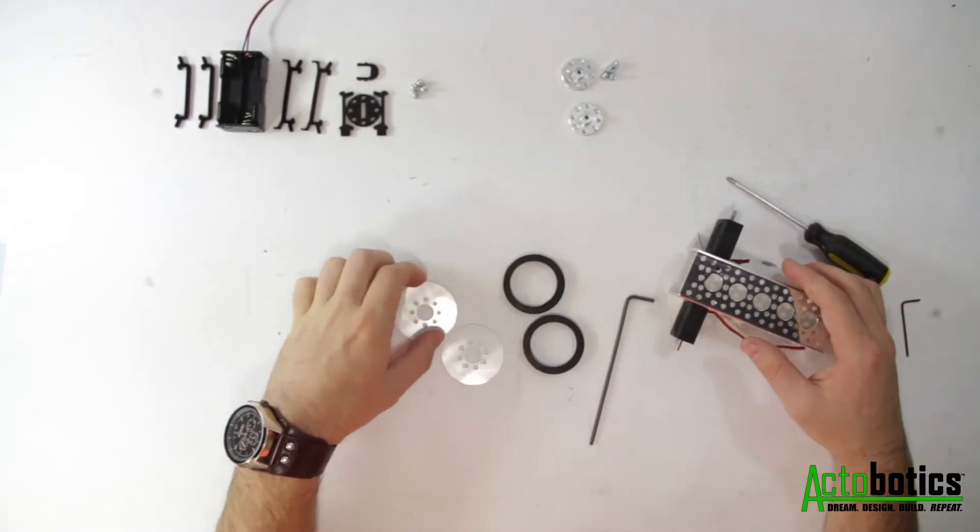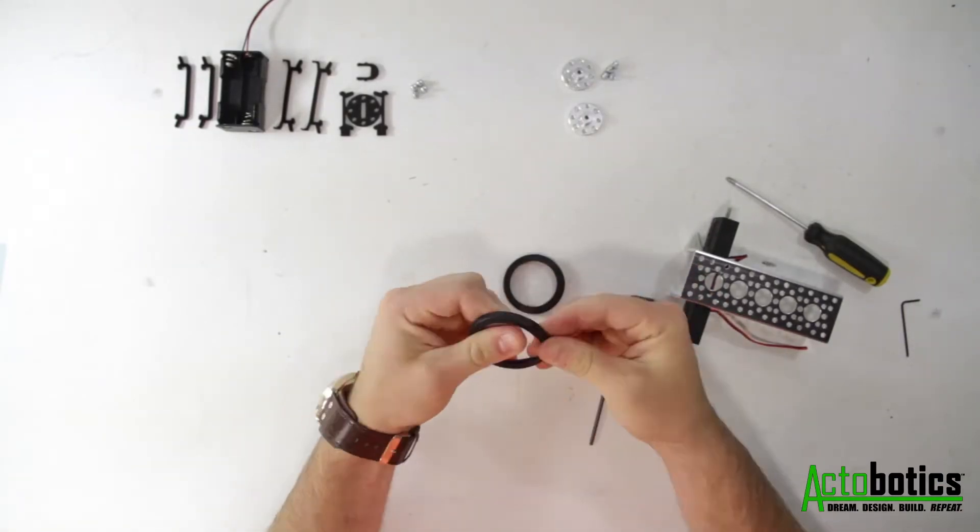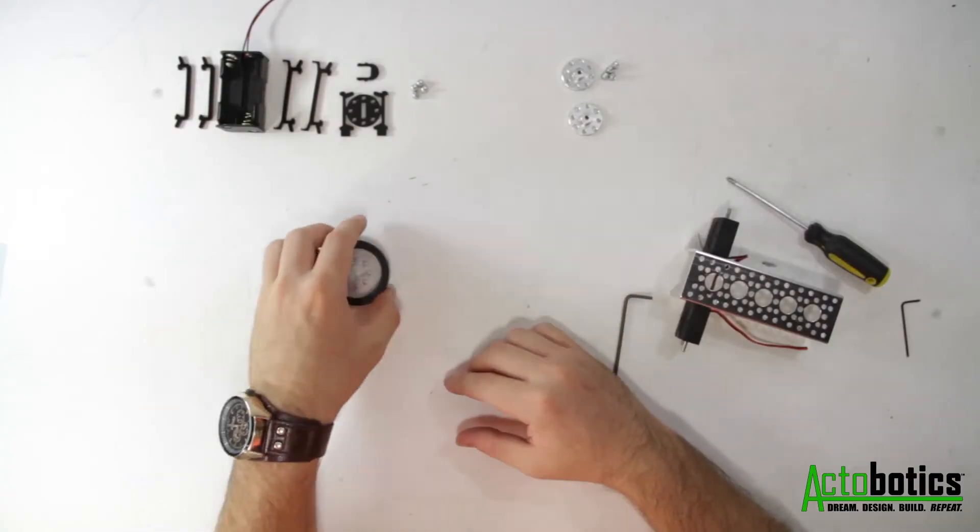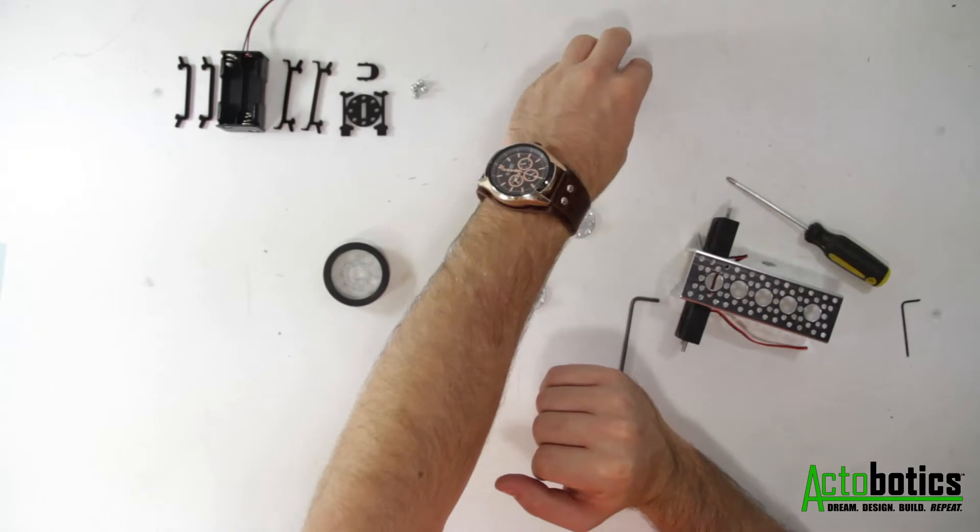You'll next grab the acrylic wheels and the rubber traction rings and combine the two of these pieces together. Once these pieces are together you will fasten the aluminum hubs to the wheels using the provided 6-32 hex head screws.